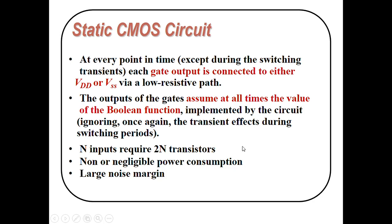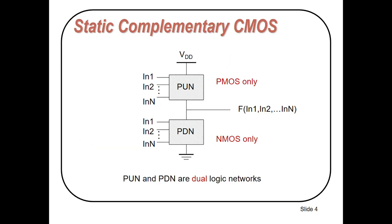For example, if we have 2 inputs we require 4 transistors, and if we have 5 inputs we require 10 transistors to implement the function. This is the standard procedure to implement static complementary CMOS circuits.